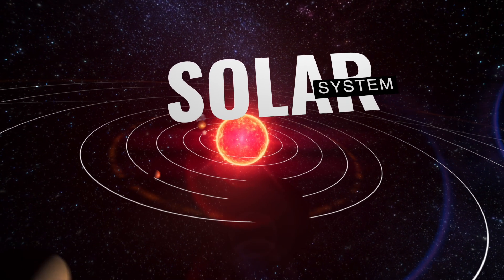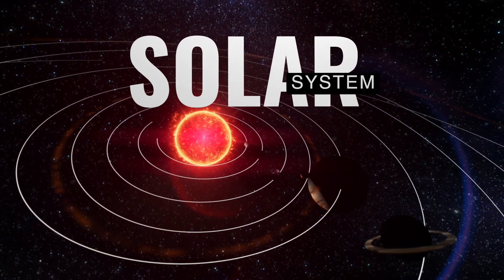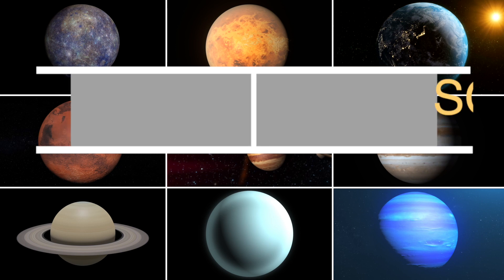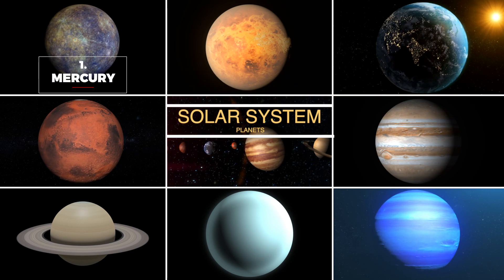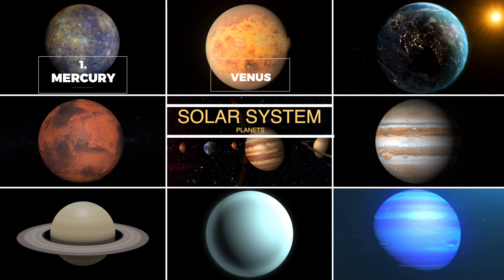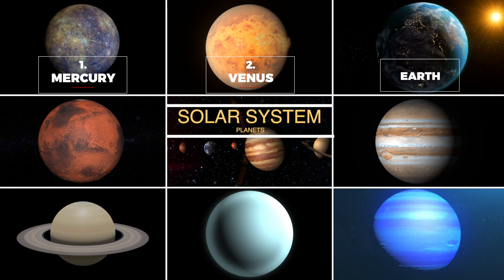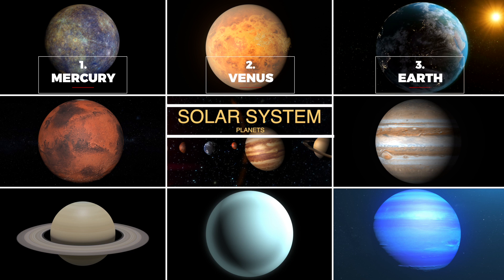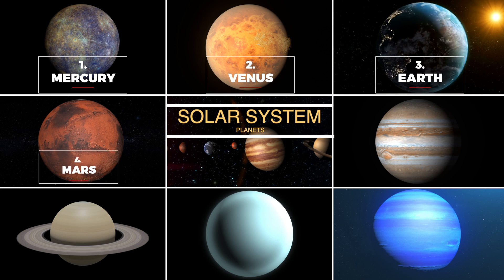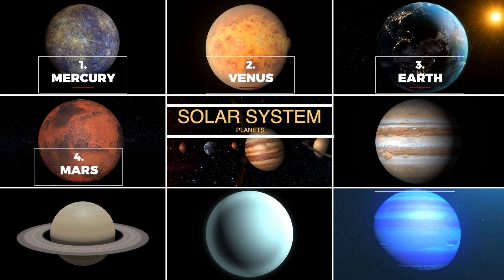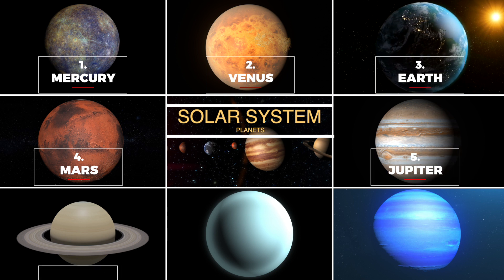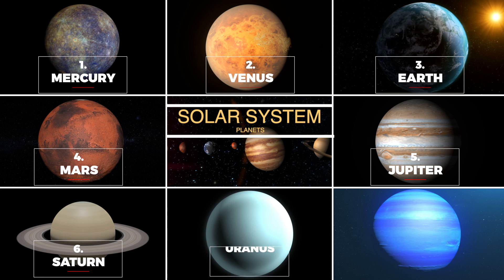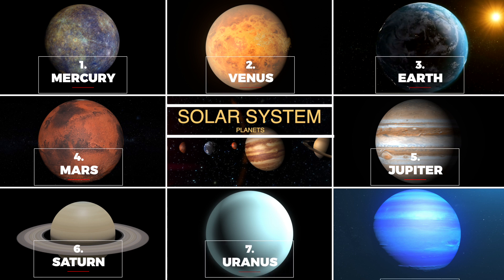Welcome to our video about the planets of our solar system. Our solar system consists of eight planets: Mercury, Venus, Earth, Mars, Jupiter, Saturn, Uranus, and Neptune.